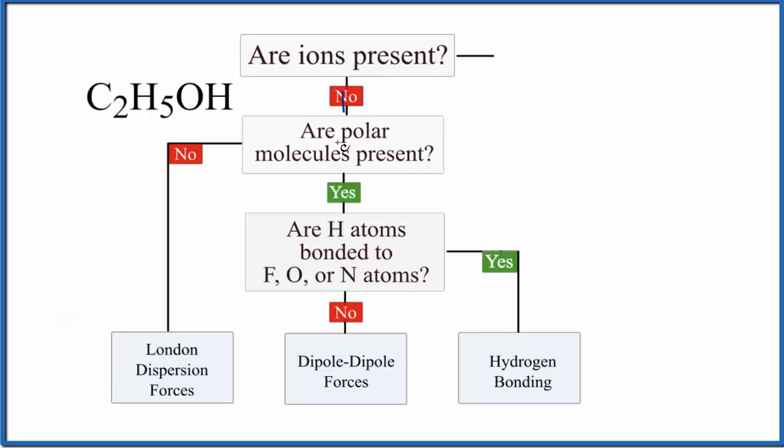We go to the next thing here. Are there any polar molecules present? So is C2H5OH a polar molecule? And to figure that out, we really need to look at the Lewis structure and then at the molecular geometry.